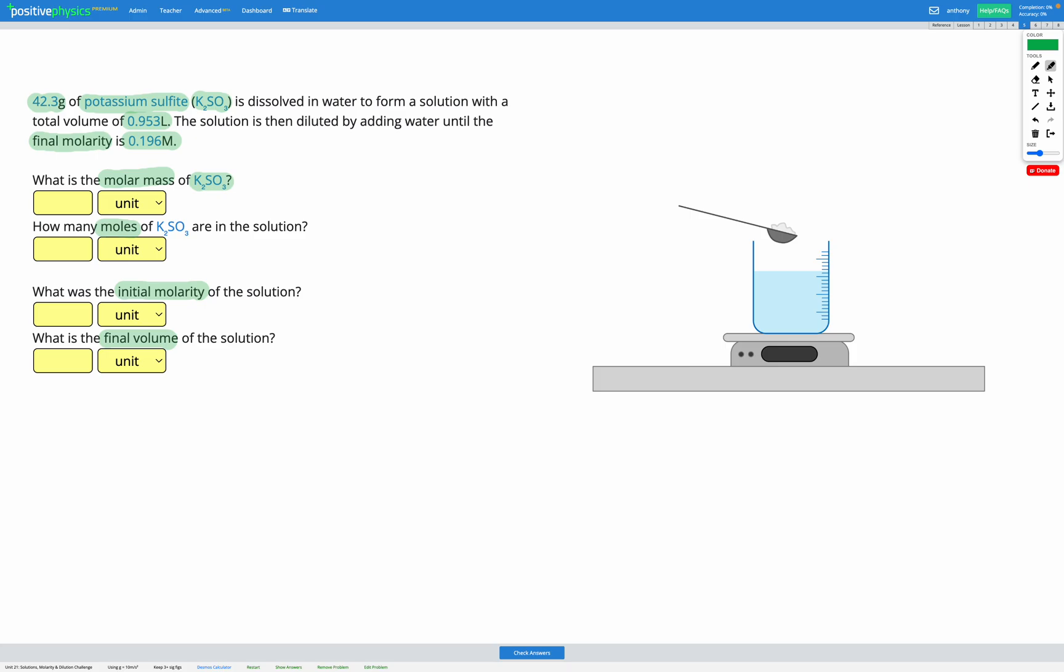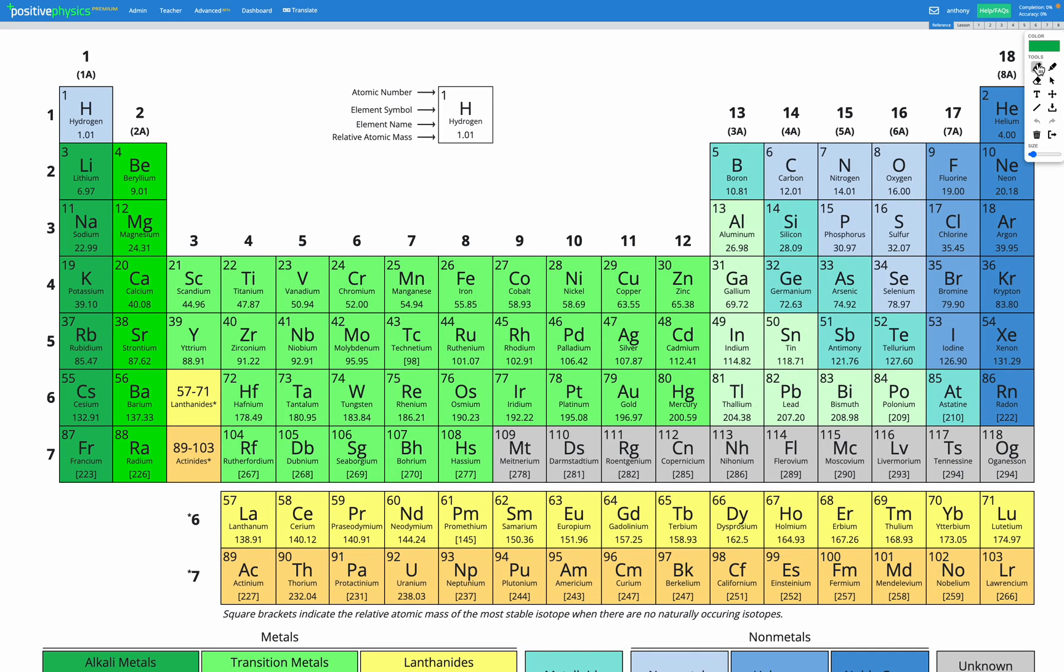Let's head to our periodic table. Our formula is K2SO3, so let's look around our periodic table and find all of those elements. K is potassium, over here on the left. S is sulfur, here's sulfur. And O is oxygen, here's oxygen.